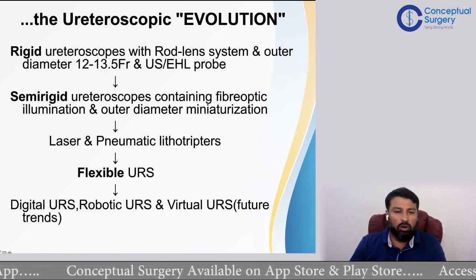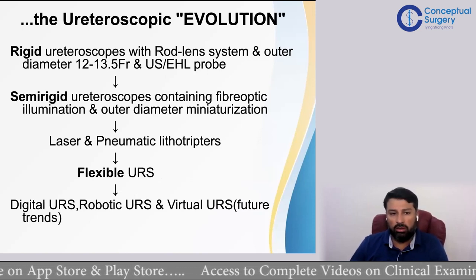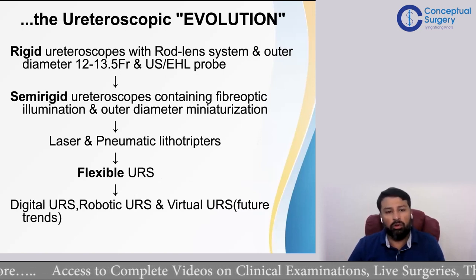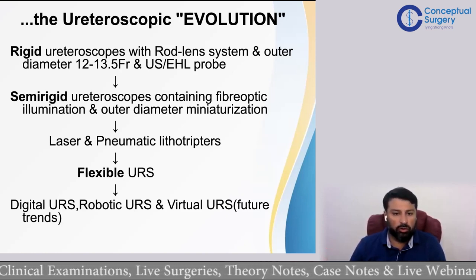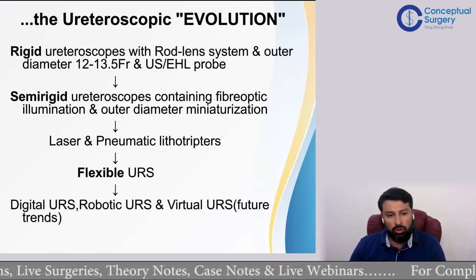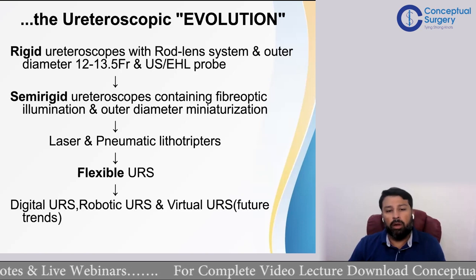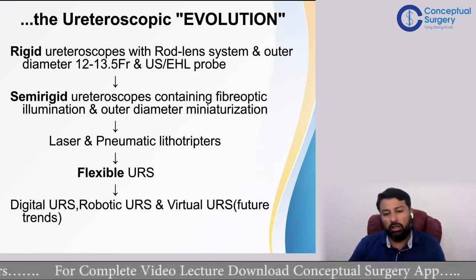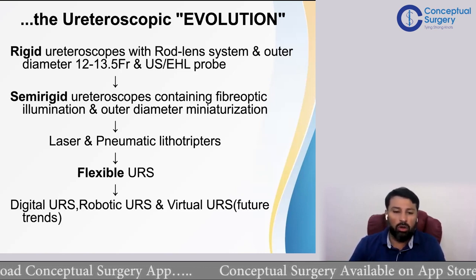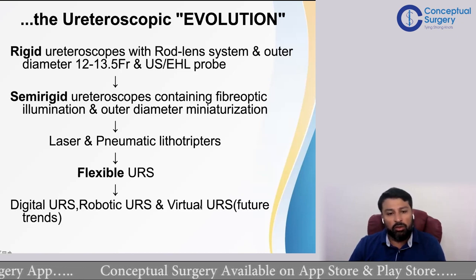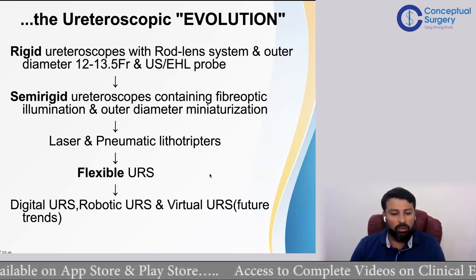This is a brief overview of how the ureteroscope has evolved. It all started with rigid ureteroscopes, which used a rod-lens system, were very large in diameter (12 to 35 French), and required dilation in almost all cases. These gave way to semi-rigid ureteroscopes — called semi-rigid because, although they appear stiff, the shaft can bend to maneuver through tortuous ureters. They use fiber optic illumination.